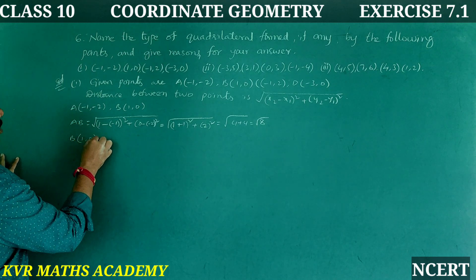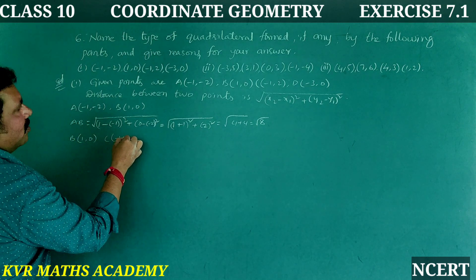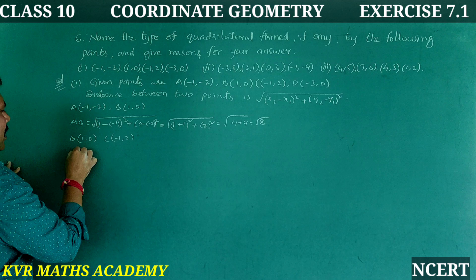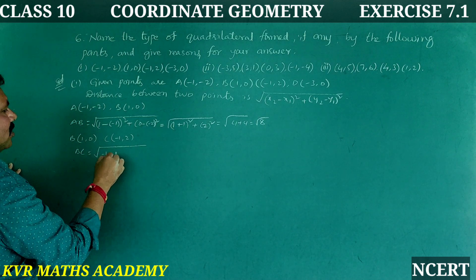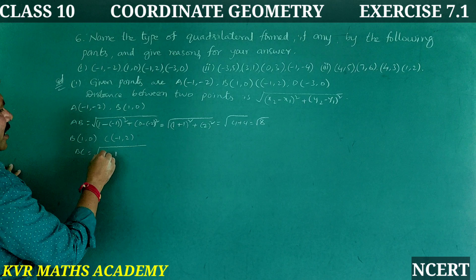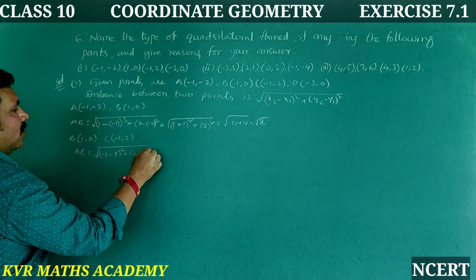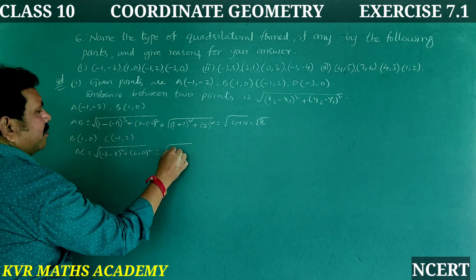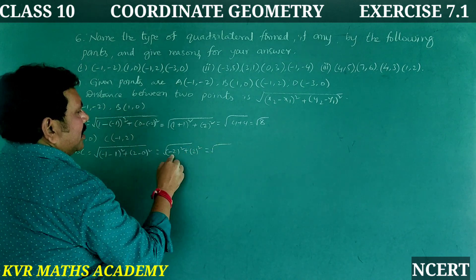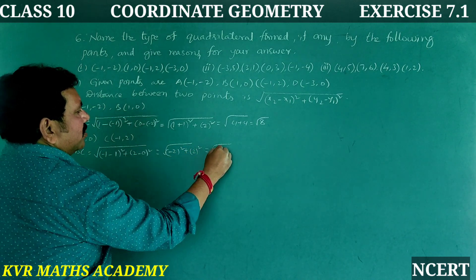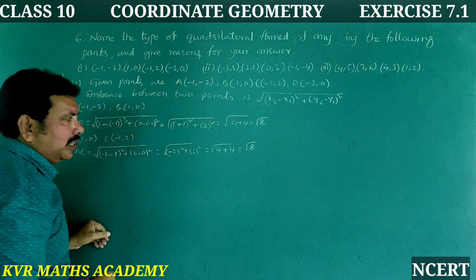Next, find BC. B is (1, 0) and C is (-1, 2). BC = root of (-1 minus 1) whole square plus (2 minus 0) whole square = root of (-2) squared plus 2 squared = root of 4 plus 4 = root 8.